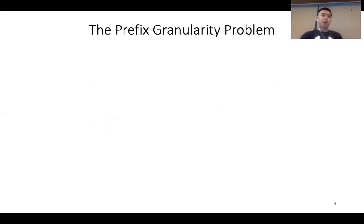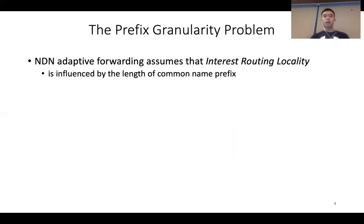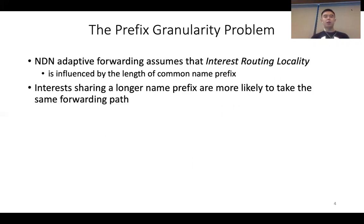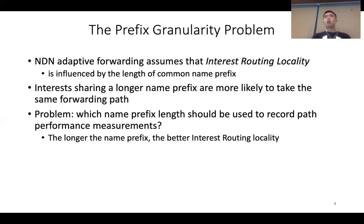What is the prefix granularity problem? NDN adaptive forwarding assumes what we call interest routing locality — the likelihood that two interests are forwarded on the same path. It assumes routing locality is related to the length of the common name prefix. That means interests sharing a longer name prefix are more likely to take the same forwarding path.